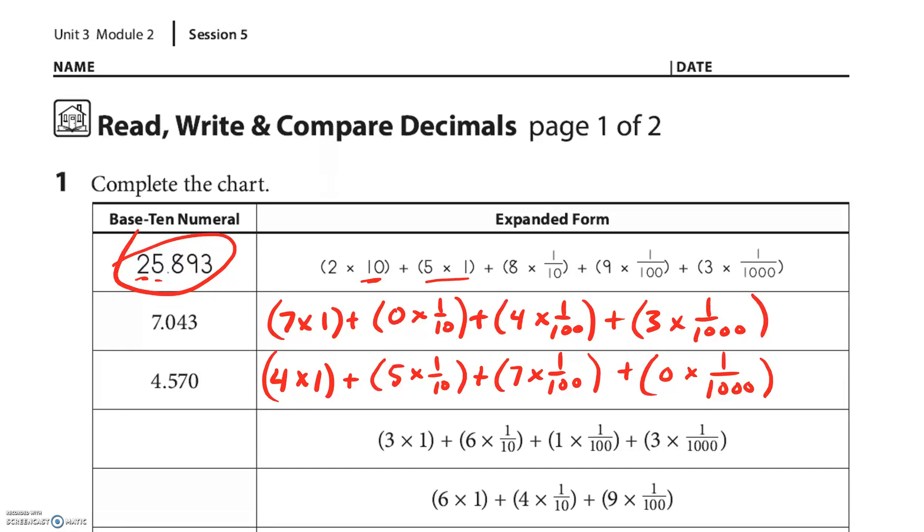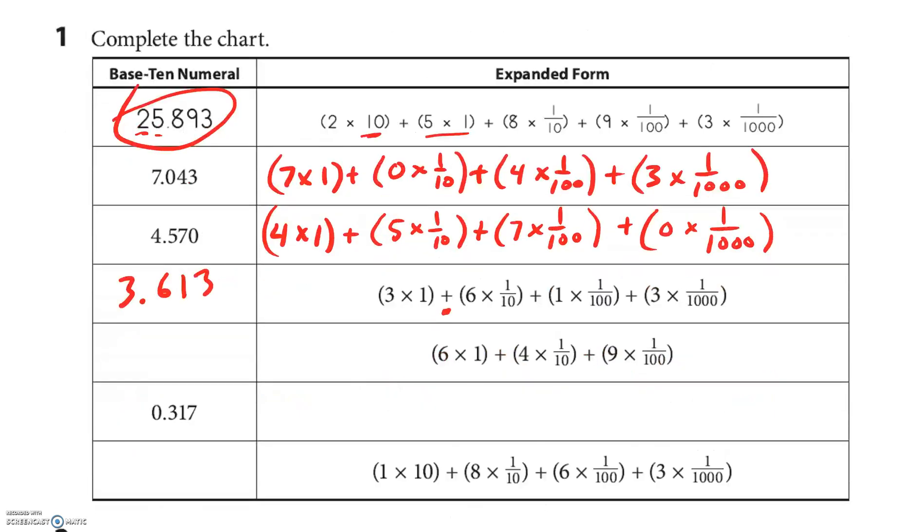Alright, let's check out this next one. So, I think the decimal goes right here, after the ones. So, I'm gonna put my 3, my decimal. I have 6 tenths. I have 1 one-hundredth, the hundredths place. And I have 3 one-thousandths.